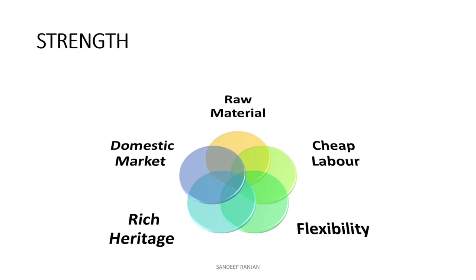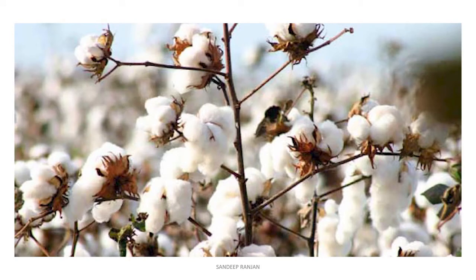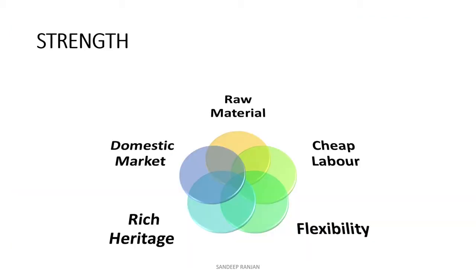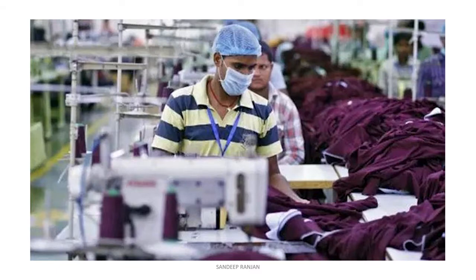India has a high degree of self-sufficiency in natural raw material fibers. India's cotton production is the world's third largest, and the Indian garment industry manufactures and processes all sorts of fibers. The Indian apparel and textile industry has always been a source of cheap labor and powerful entrepreneurship ability.